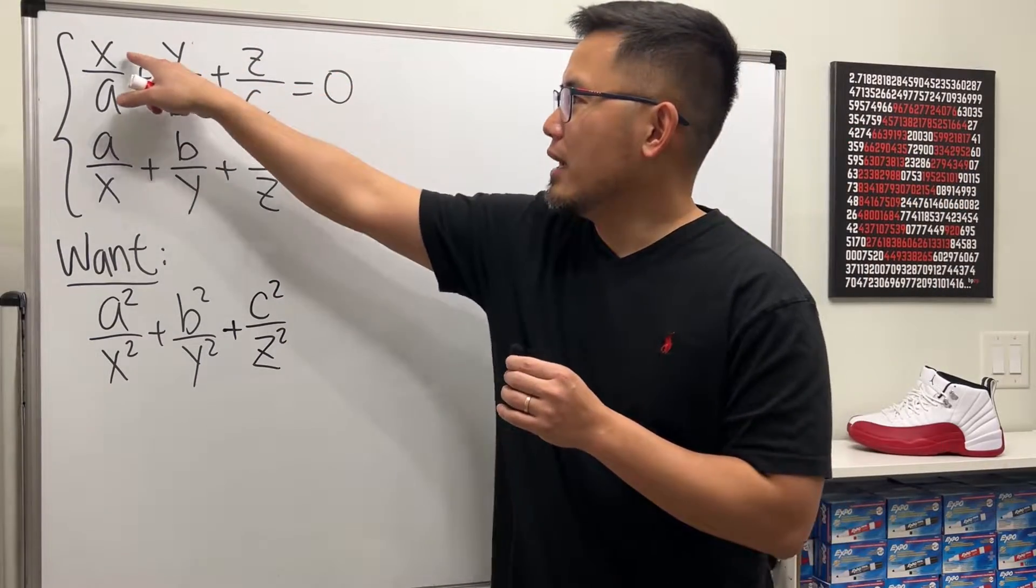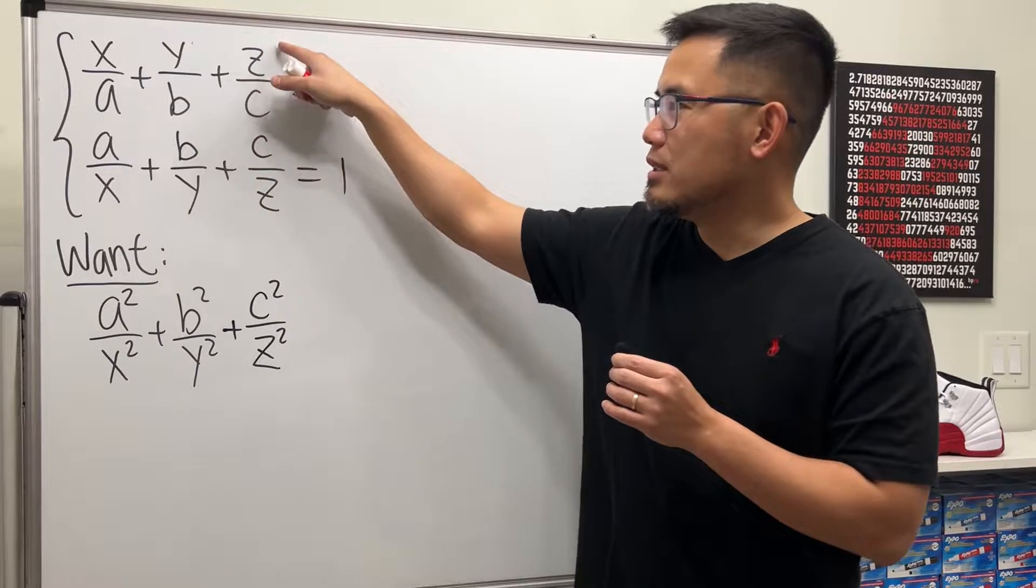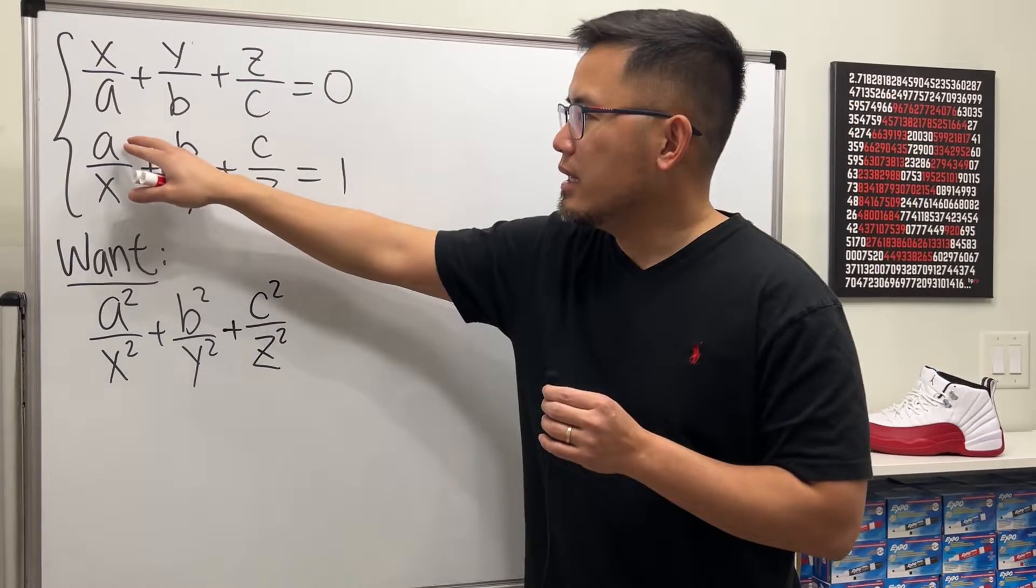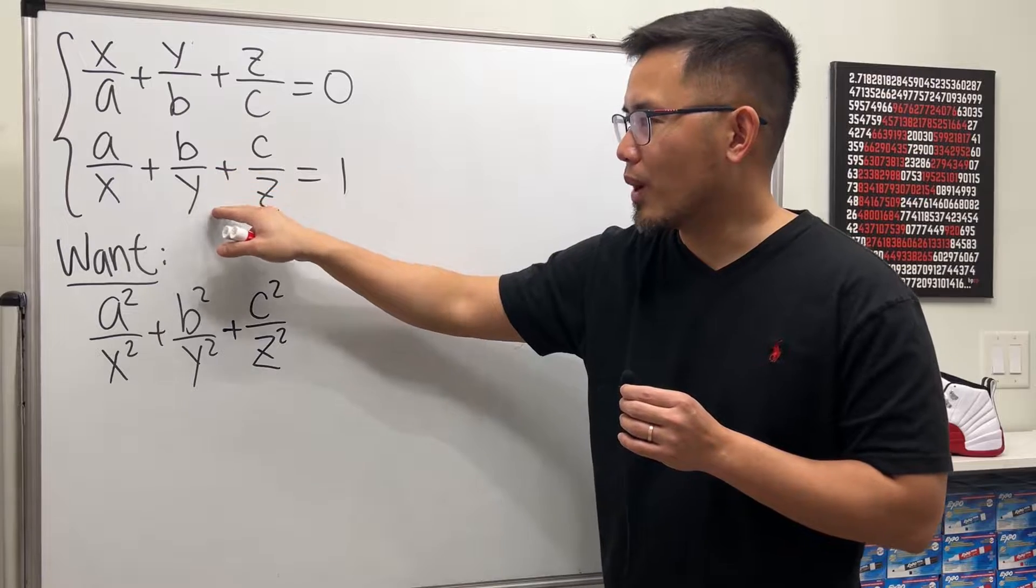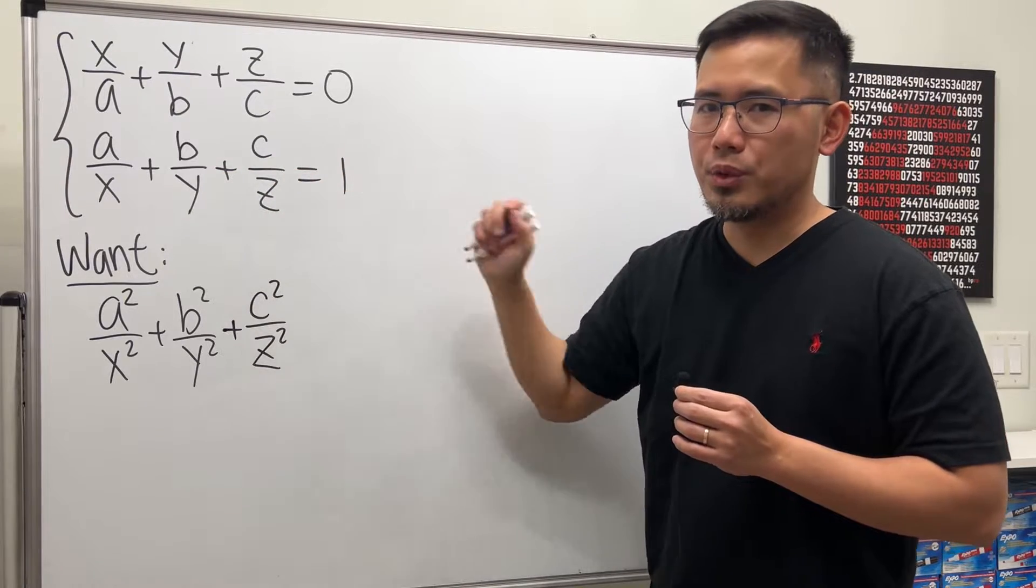First, we have given this information: x over a plus y over b plus z over c equals 0. And then if you do the reciprocal, we have a over x plus b over y plus c over z. That will be equal to 1.